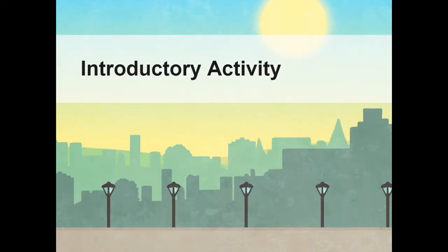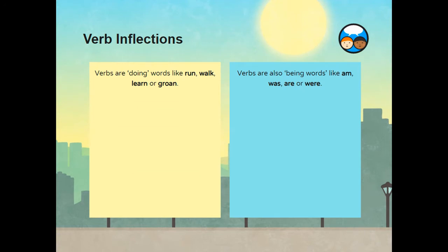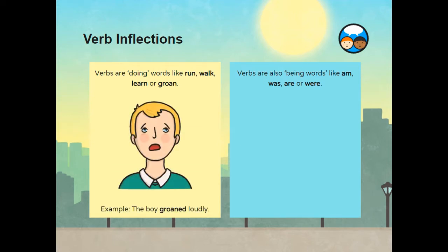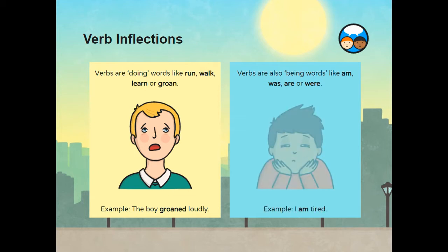The introductory activity. Verbs are doing words, like run, walk, learn or groan. Example: the boy groaned loudly. Verbs are also being words, like am, was, are or were. Example: I am tired.